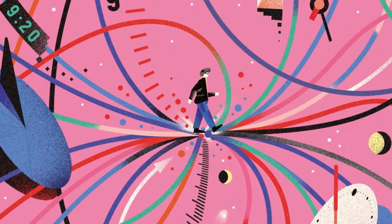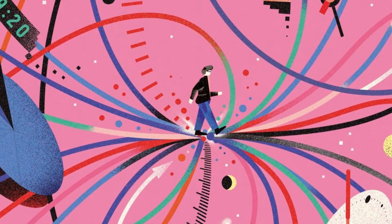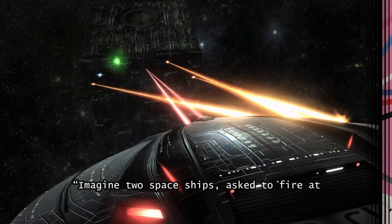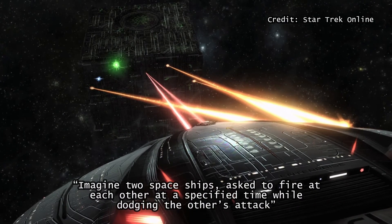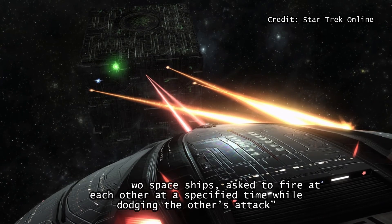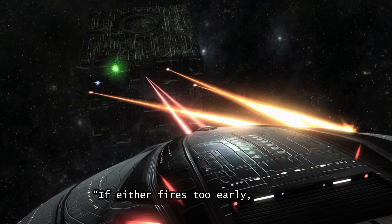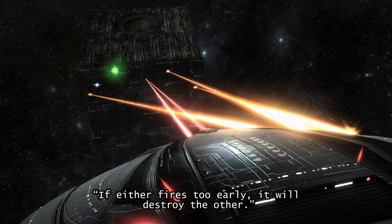She said Einstein's theory described how the presence of a massive object slowed time. Imagine two spaceships, asked to fire at each other at a specified time while dodging the other's attack, she said. If either fires too early, it will destroy the other.